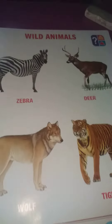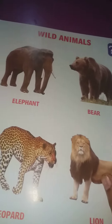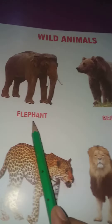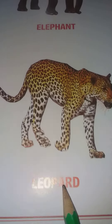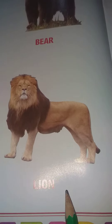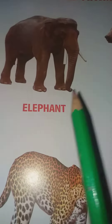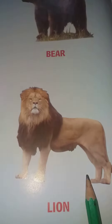Turn your page and learn more animals. This is an Elephant. This is a Beo. This is a Leopard. This is a Loin. Once more, beta — repeat again: Elephant, Beo, Leopard, Loin.